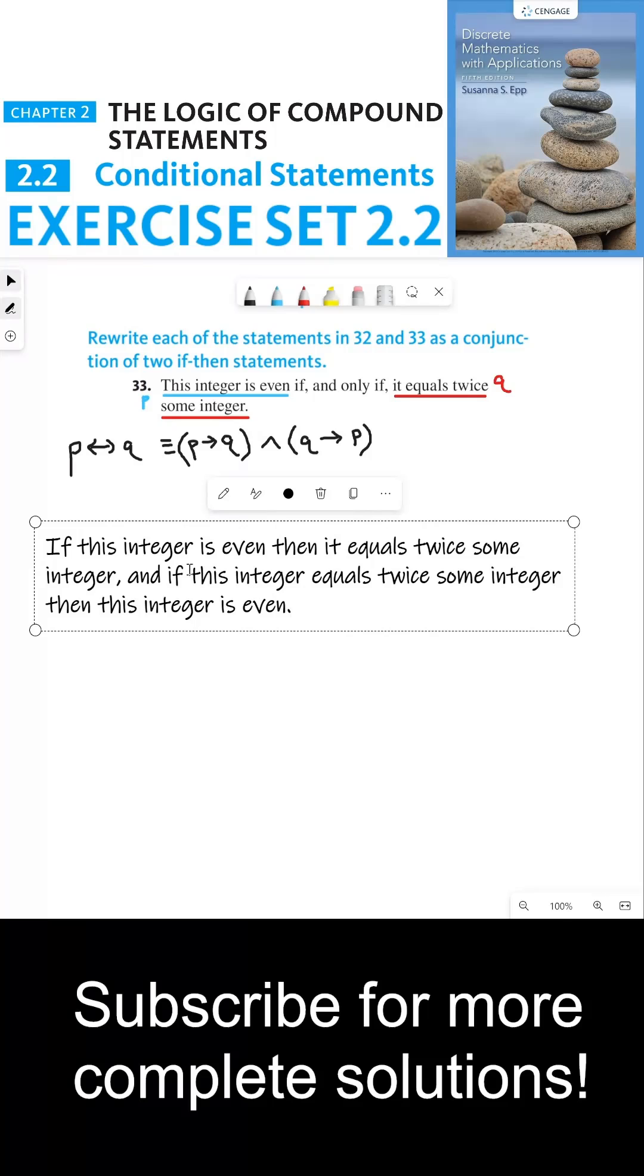So this is how I would rewrite the statement. And it's a little confusing in how it's said, but if this integer is even, then it equals twice some integer. So that's the P implies Q part.